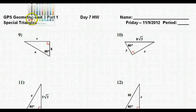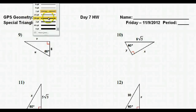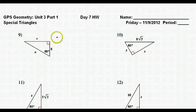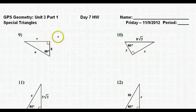In this unit we will practice finding the unknown sides of special right triangles — specifically the 30-60-90 triangle and the 45-45-90 triangle.